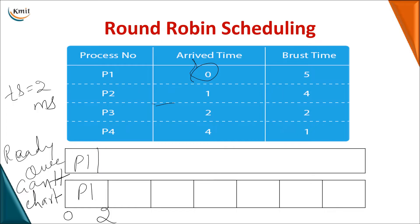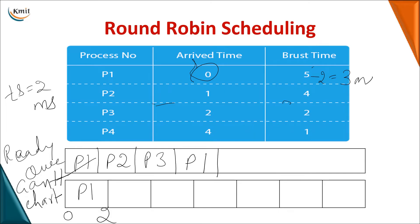After 2 milliseconds, we cross-check the table. At time quantum 2, P2 and P3 are already present in the ready queue. P1 is removed from the front since it already got a chance. P2 and P3 are in the queue, and P1 is added at the back because out of 5 milliseconds required, only 2 were used — 3 milliseconds are still pending for P1.